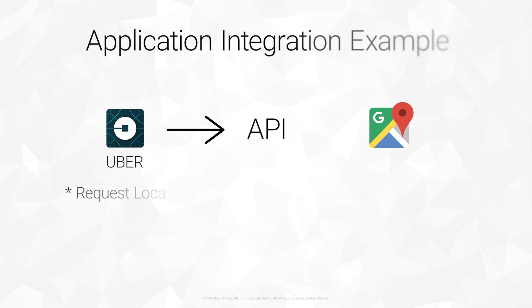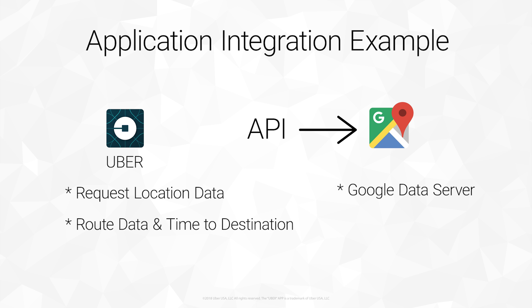Uber gives rides to customers based on location and how long the trip will take. With the API, they can then calculate routes, fees, and any traffic issues based on the information.